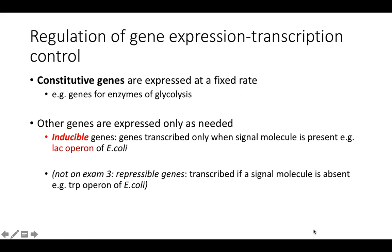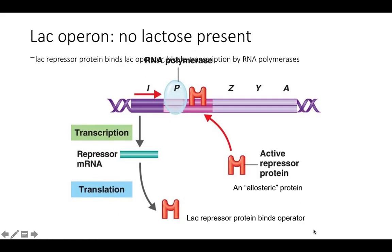We're not going to cover repressible genes. Here is the E. coli lac operon when lactose is not present: the lac I repressor protein, which is constitutively made, binds to the operator and sets up a roadblock so RNA polymerase can't transcribe the genes. When lactose is added to the environment, allolactose binds to the repressor protein, causes it to change shape, and it can no longer bind to the operator — that's how we induce transcription of the lac operon genes.